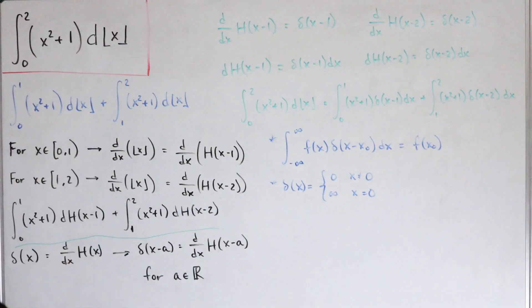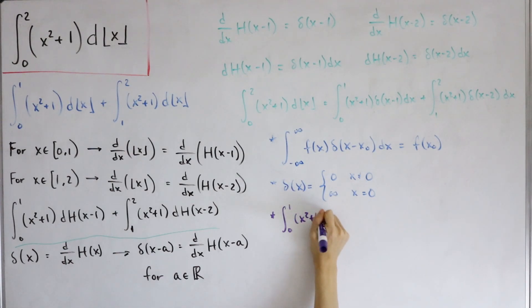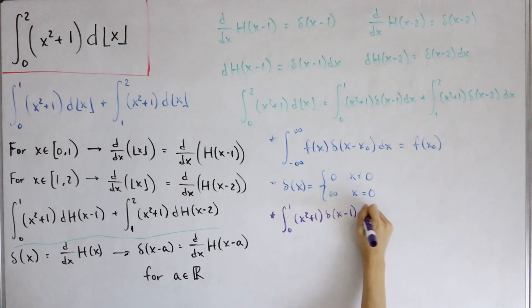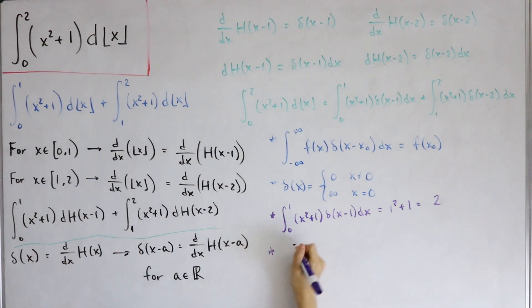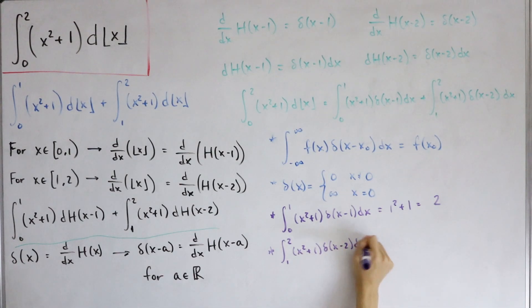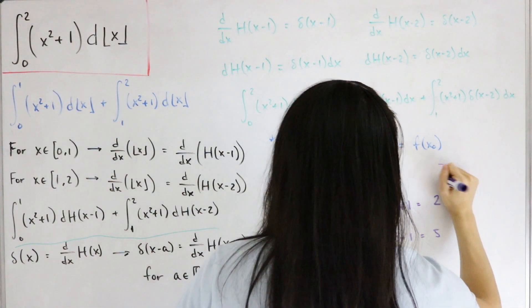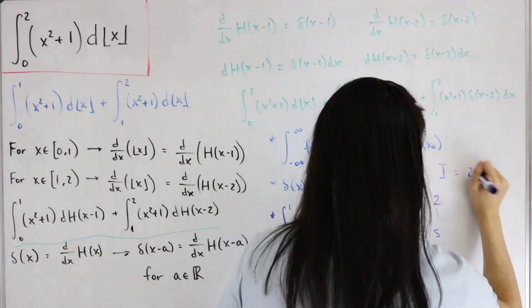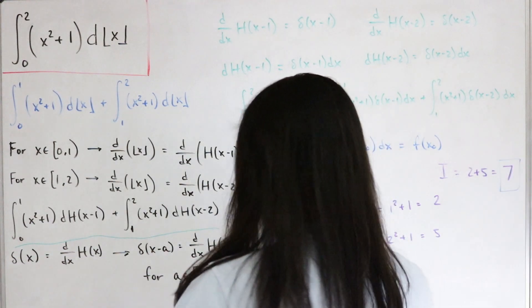For the first integral: plugging in x equals one gives 1²+1 = 2. For the second integral: plugging in x equals two gives 2²+1 = 5. Therefore the total integral equals 2 plus 5, which is simply 7. That is our final answer to what looks like a basic integral at first glance, but the floor function differential makes everything a game changer.